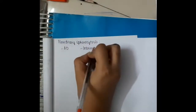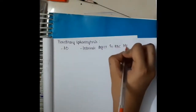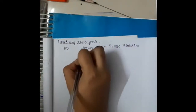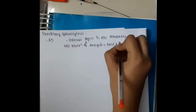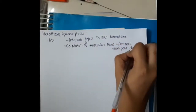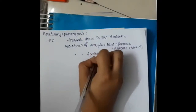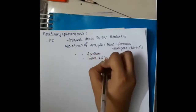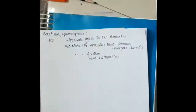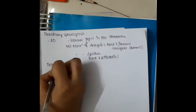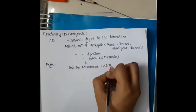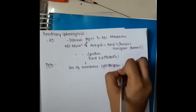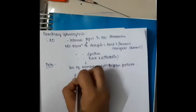Hereditary spherocytosis is an autosomal dominant disorder occurring due to an intrinsic defect in the RBC membrane. There is mutation of ankyrin, followed by band 3 mutation - band 3 being an anionic transport channel. This is followed by mutation of spectrin or mutation of band 4.2.